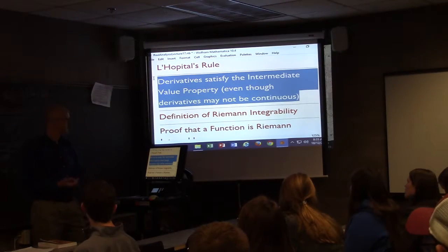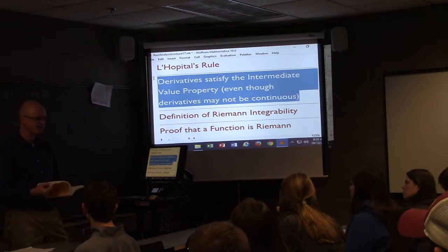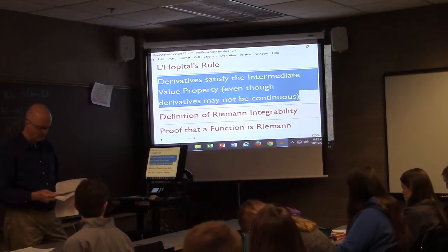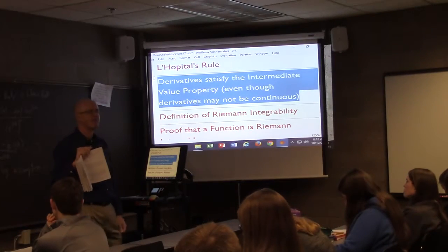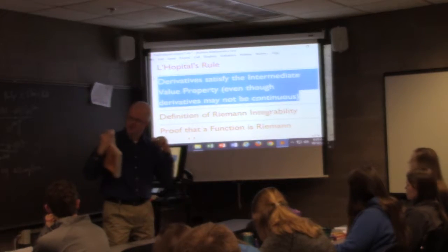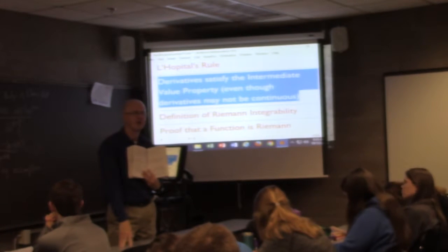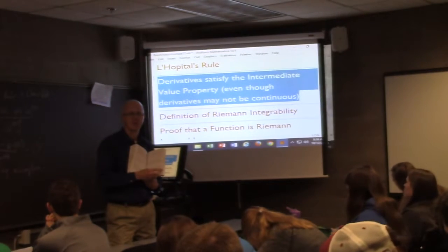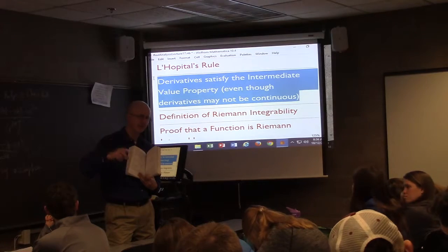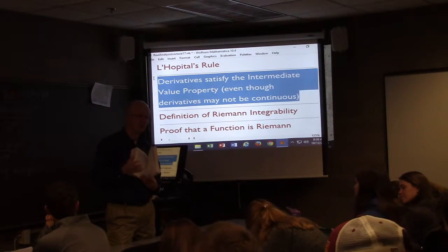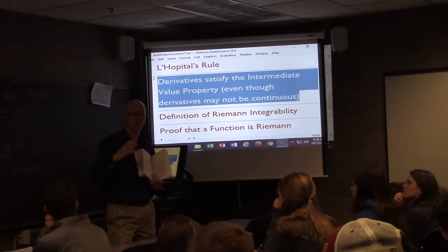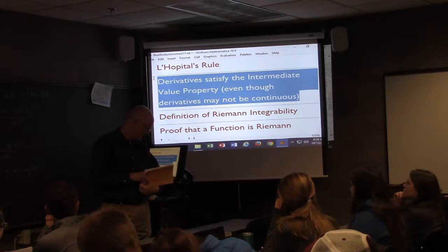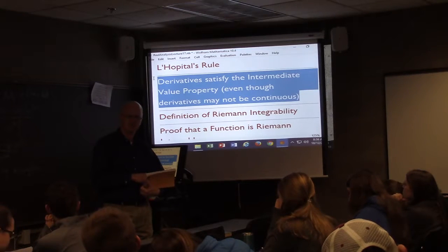Derivatives satisfy the intermediate value property even though they may not be continuous. The main example in the book is on page 147, the start of section 4.3 — a piecewise function with infinitely many oscillations that get smaller fast enough that the derivative exists at zero, but the derivative function is not continuous at zero because the oscillations in the derivative do not decrease in amplitude. The intermediate value property still holds, and the book's proof, while a little strange, can be followed step by step.